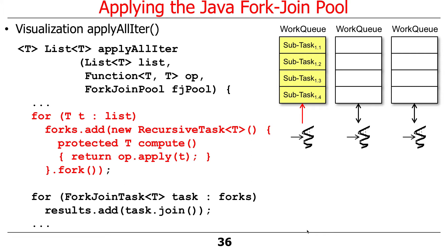What this code is doing is walking through the original list — in the example, it was a list of big fractions we wanted to apply some operation to. For each element in the original list, it makes a new recursive task whose compute method, when called, is going to apply the operation to the big fraction and return that as the result. It forks that recursive task and then stores the task in the forks list — a linked list. So we're putting things in here and forking stuff off.